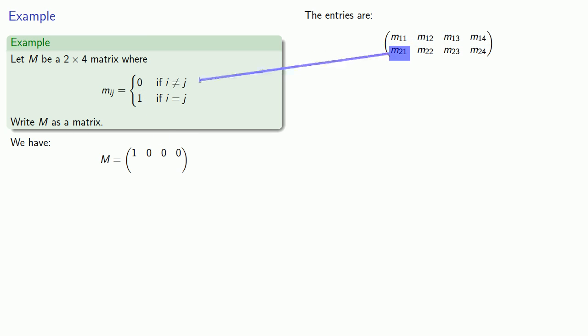M21, because i is not equal to j, is also going to be 0. M22, since i equals j, is going to be 1. And M23 and M24, because i and j are not equal, are also going to be 0 again.